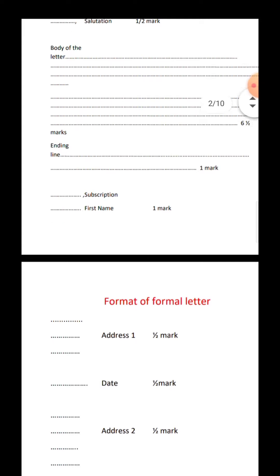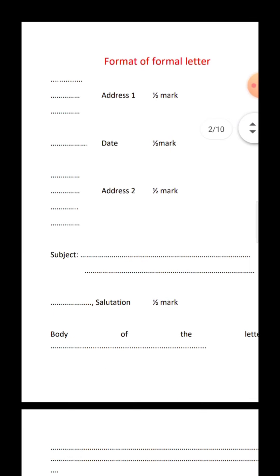Now let's talk about the formal letter. In the formal letter, generally, you write to respected dear teachers or respected municipal corporations, which are called High Authorities. They are a little different. In the first address, you have to write your address, then leave a line and write the date. Then you have to write a line and write the receiver's address — for example, the principal and the school name, and then the city and pin code. Then leave a line and write the subject.